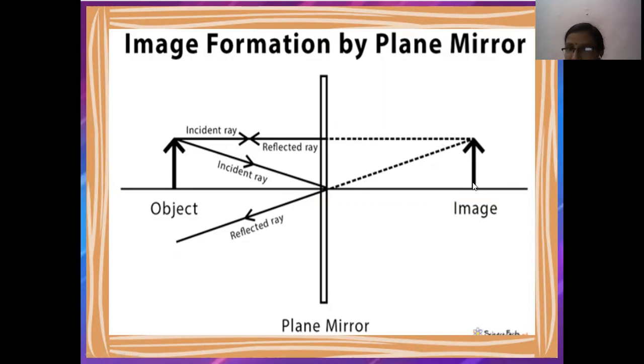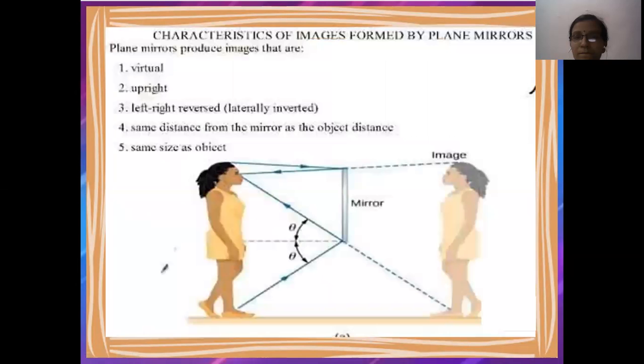The incident rays and now the reflecting rays. After incident, what happens? They are reflecting. So by this, they are forming the image.